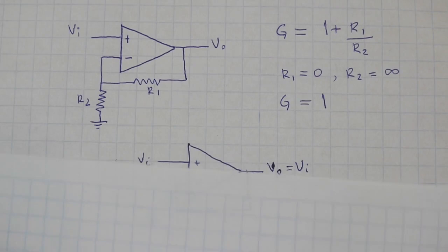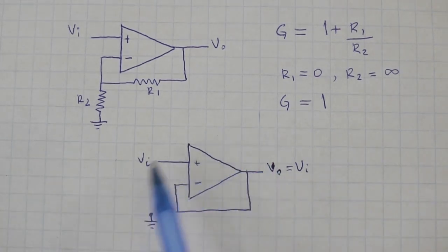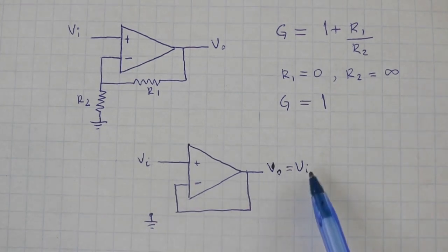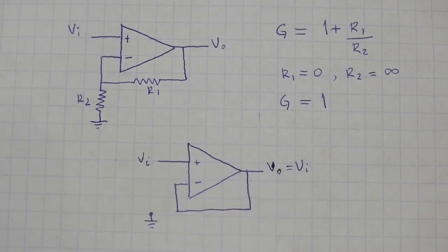Therefore, we will obtain something like this, which is the voltage follower configuration. The output voltage will be always equal to the input voltage.